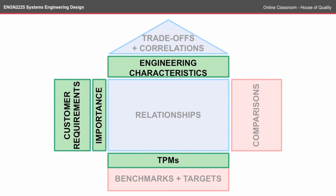We've already covered the areas shown here in green: the customer requirements, which is what we do in the pairwise analysis, and the importance ranking that we end up with in that analysis. The engineering characteristics and the metrics — the TPMs — shown at the bottom, were also covered in the TPM online classroom.